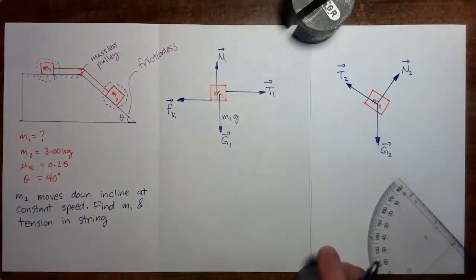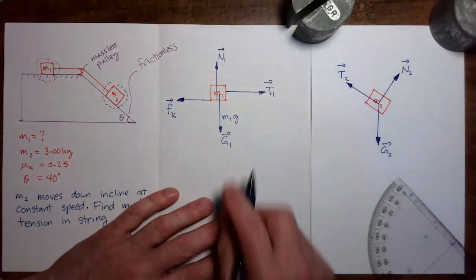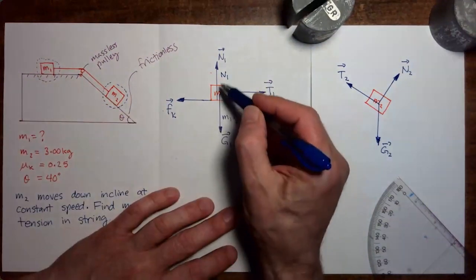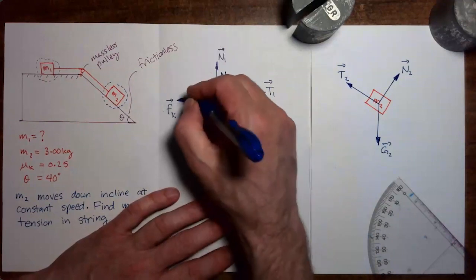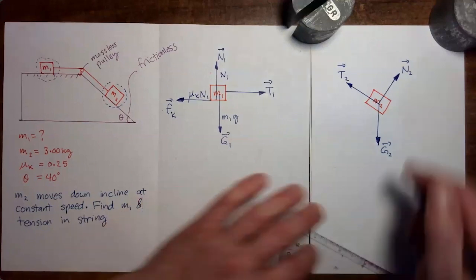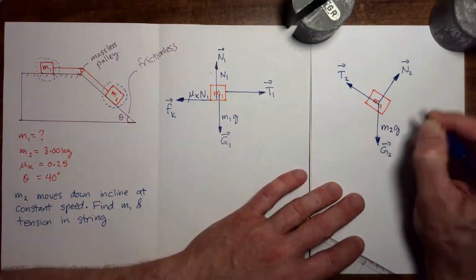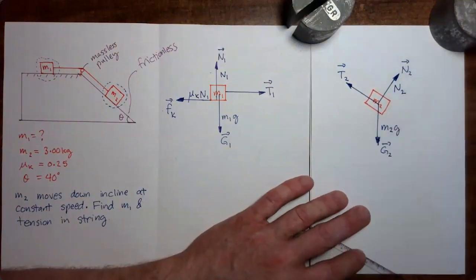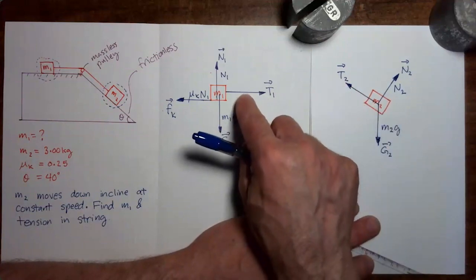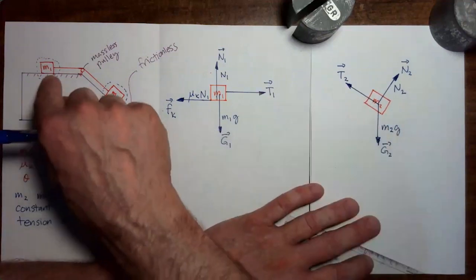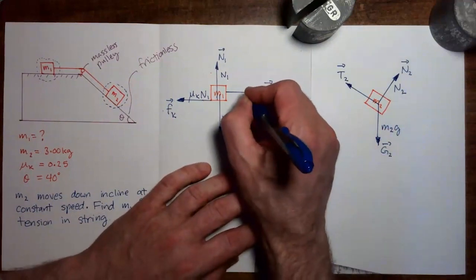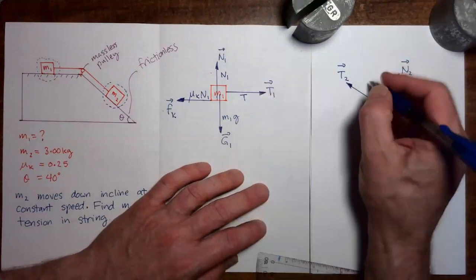Now let's put in the magnitudes. For normal force 1, magnitude N1. The kinetic friction force is mu_k times N1. For mass 2, gravitational force G2 has magnitude M2g, and normal force N2 has magnitude N2. For the tension forces T1 and T2, since we have the same tension throughout the string with a massless pulley, the magnitudes are equal. So both are called capital T.